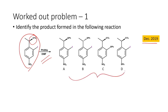We have four different products given as options A, B, C, D. In option A, the OTs is replaced by SPh group. In option B, the OTs group is also replaced by SPh, but the difference between A and B is only the change in stereochemistry of the product formed. In option C, the iodo group is replaced by the SPh group. In option D, the nitro group is replaced by SPh. We have to find out what is the actual product formed.